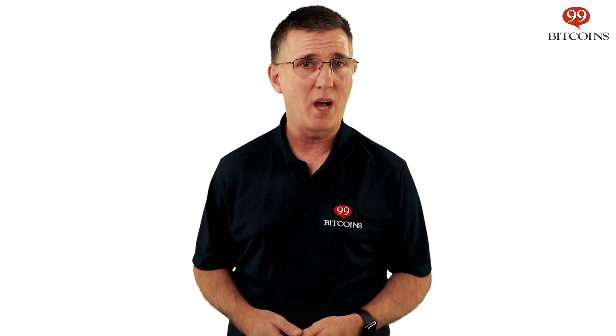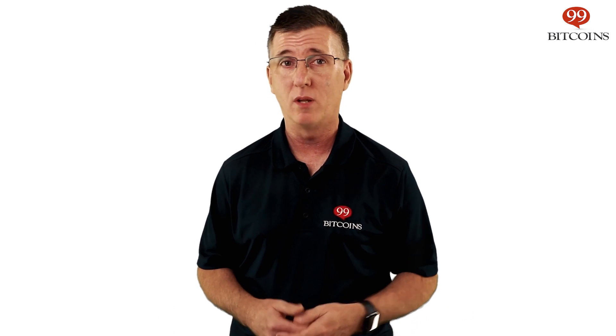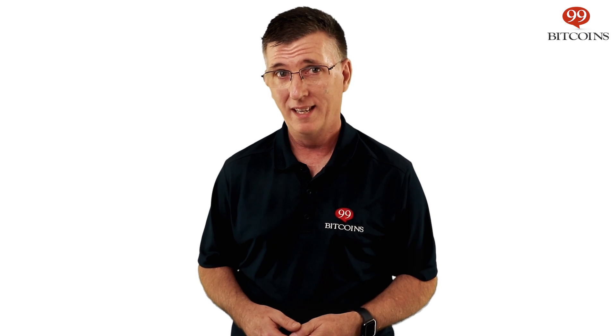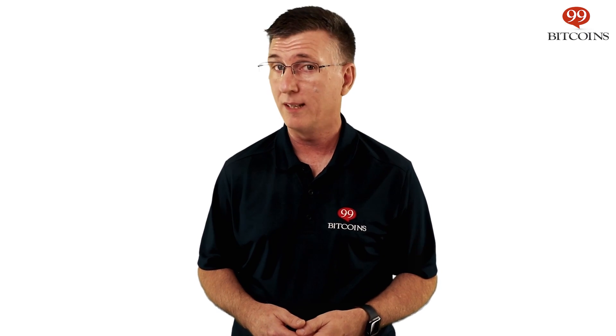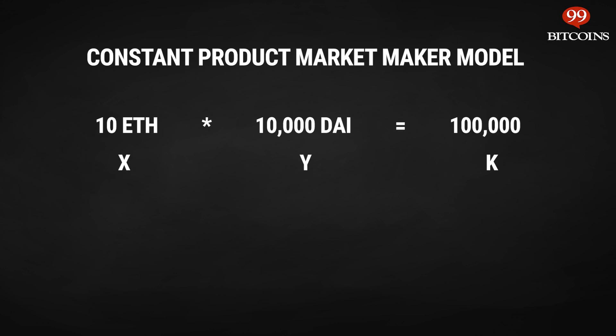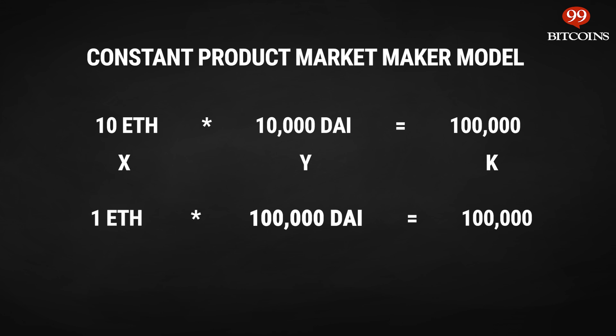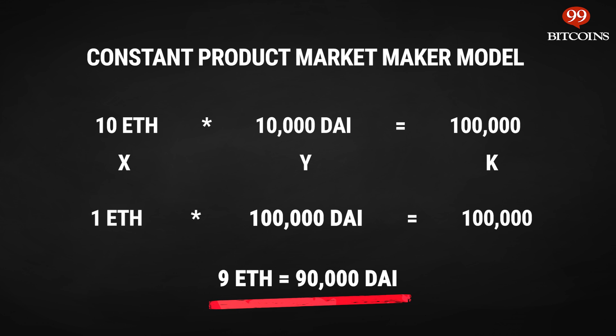By using the constant product market maker model algorithm, liquidity is kept without the need for external market makers, no matter how large the order size or how tiny the liquidity pool. This model makes it infinitely expensive to consume the whole amount of a certain coin, putting a damper on larger orders. For example, if I wanted to buy nine Ether, it would cost 90,000 DAI to maintain the 100,000 constant, making each Ether cost 10,000 DAI instead of the just over 1,100 DAI it would cost to buy only one Ether. There are other DEXs with different AMM algorithms than the one used in Uniswap, but that's beyond the scope of this video.